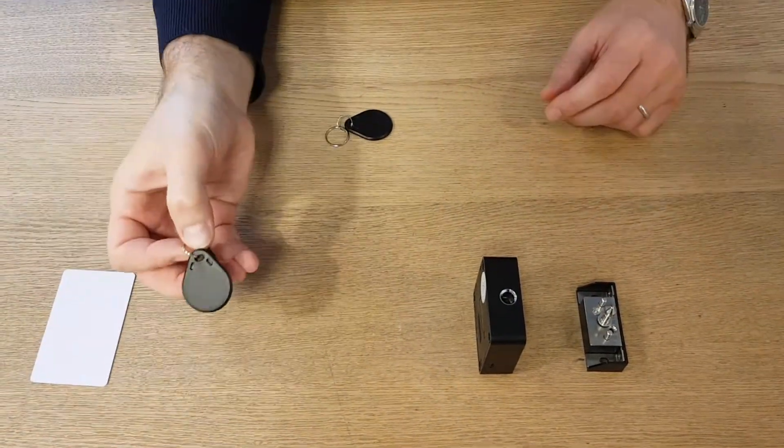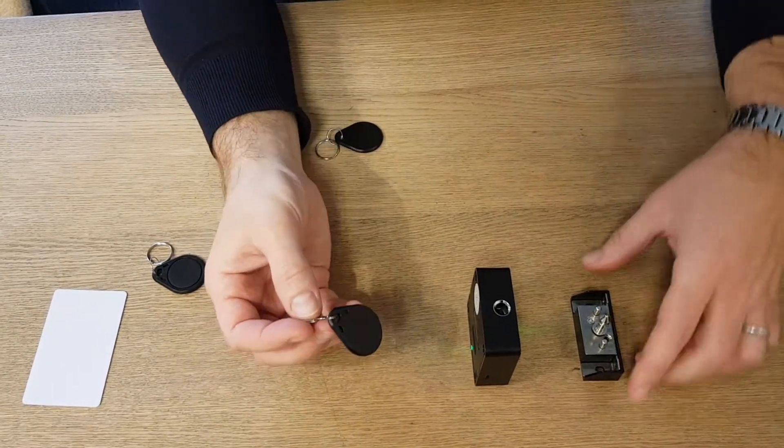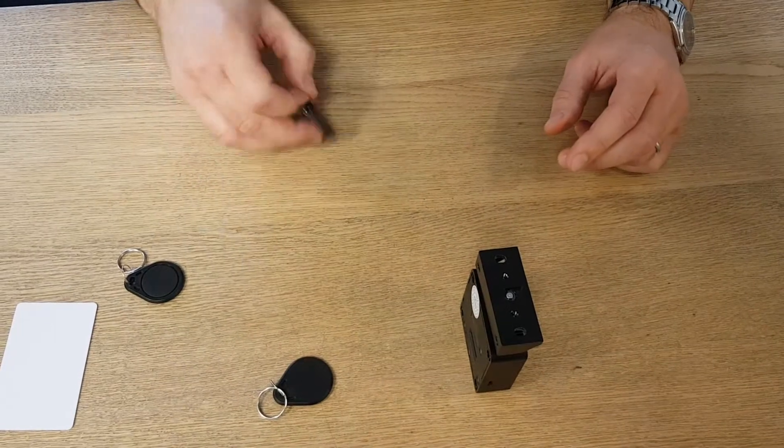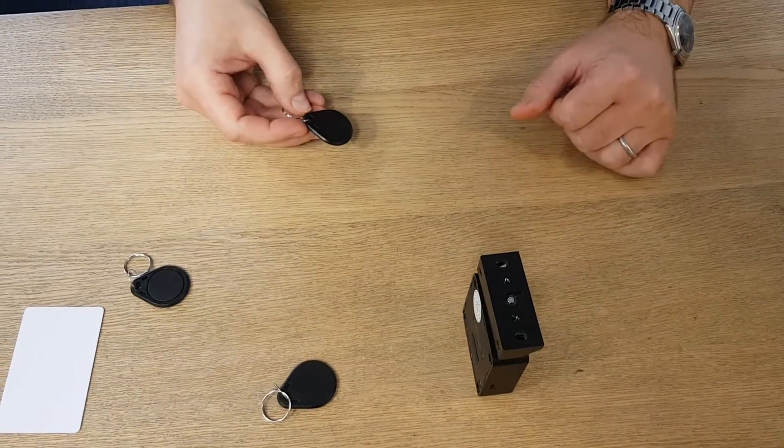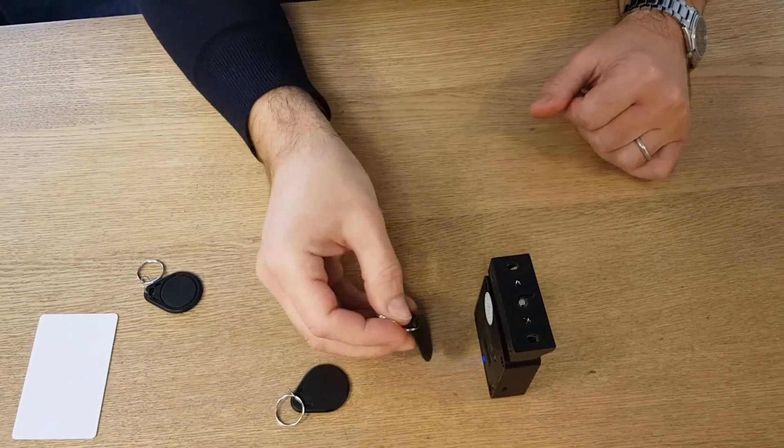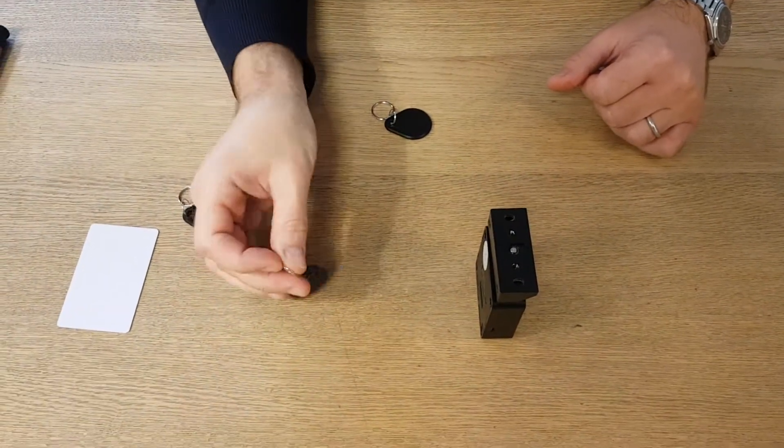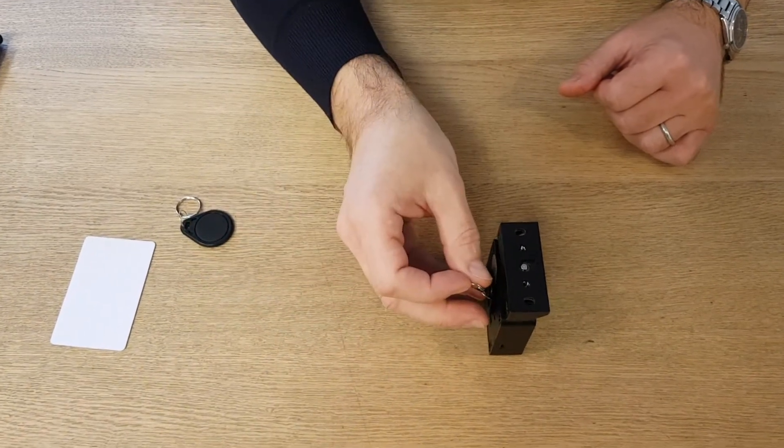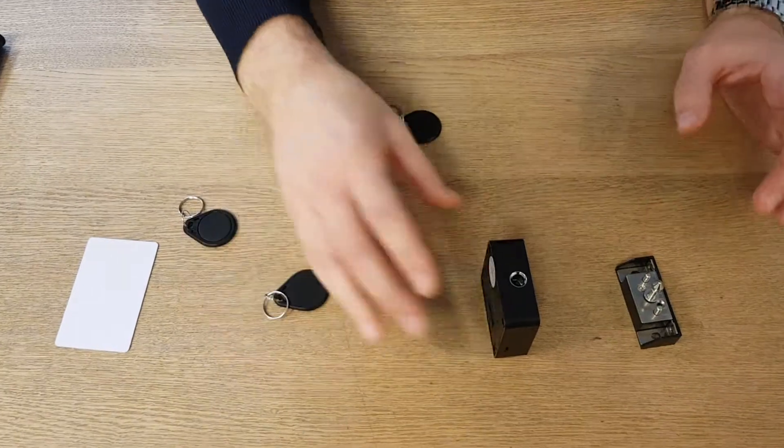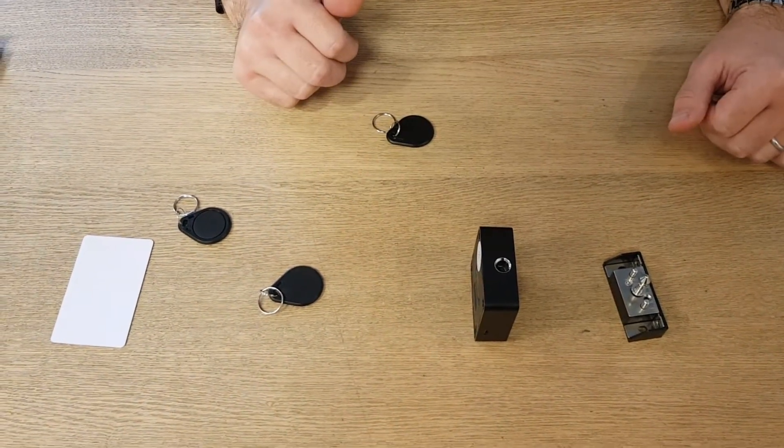So now comes a new user and now he wants to use the cabinet and now he can access it. Now the first user comes back because he thinks he forgot something in his cabinet, but now he has no access. Only the last user who closed the door has access. So this is the general way public mode is working.